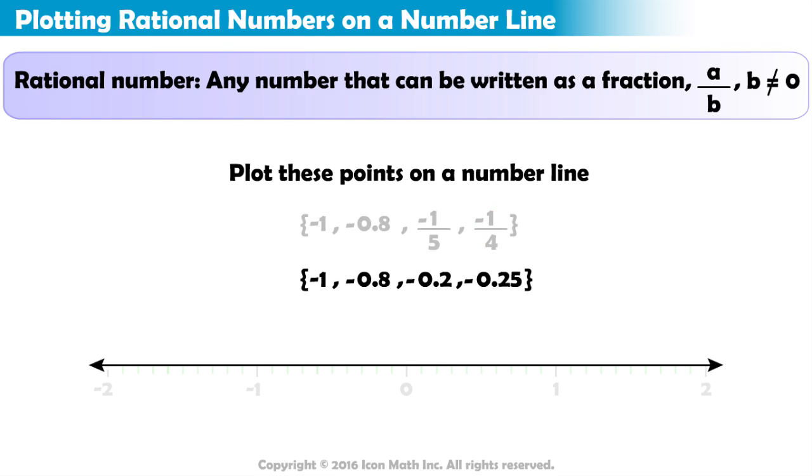Now, we must place them on a number line. Since there are no positive numbers in our set, we know that we won't plot any numbers to the right of 0. Now, we see that negative 1 is already labeled here on the number line. So, let's mark this with a solid dot at its location.